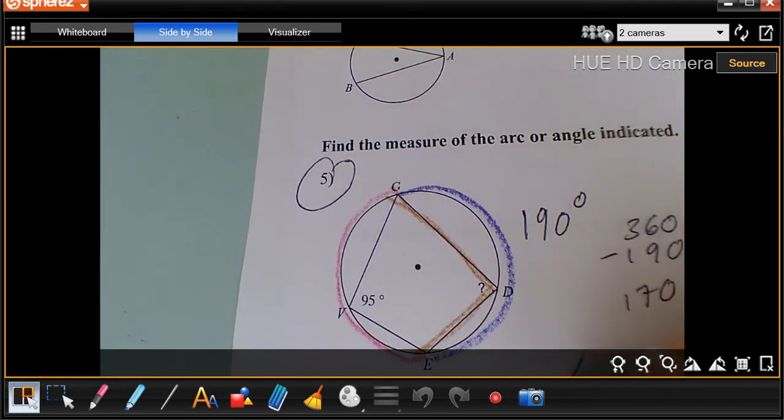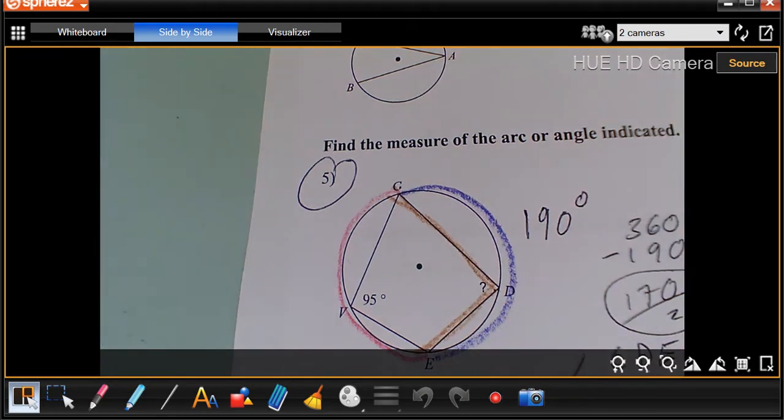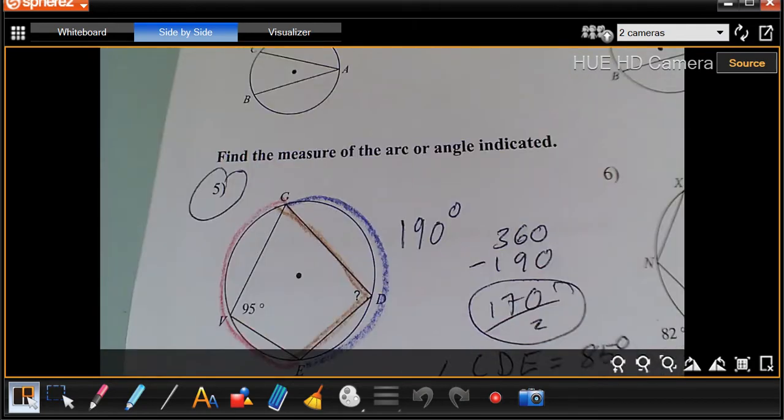So I'm going to label that angle CDE equals 85 degrees because it's half of 170. Now let's turn it over.